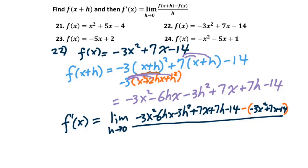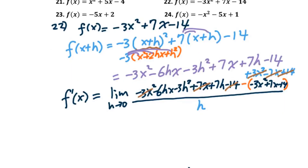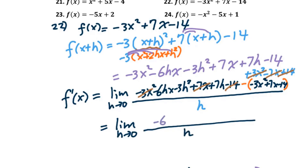We apply the distributive property to minus f(x), getting +3x² - 7x + 14, all over h. Then everything in the parentheses cancels out: +14 and -14, -7x and +7x, +3x² and -3x² all cancel. We are left with the limit as h approaches 0 of (-6hx - 3h² + 7h) over h.